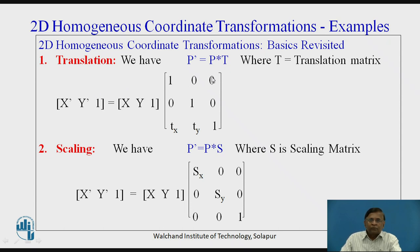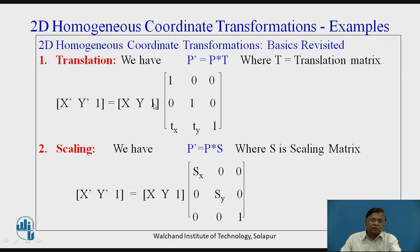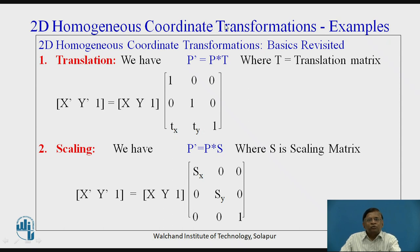This is the relationship for a point, wherein x-dash, y-dash indicates the coordinates of the new transformed point. This is the augmented part of the algorithm for homogeneous coordinate transformations. So p-dash equals p into this 3×3 matrix, which represents the translation matrix in homogeneous coordinate transformations, wherein the 3×3 matrix is required for 2D working, and the third row and third column indicate the augmented part.